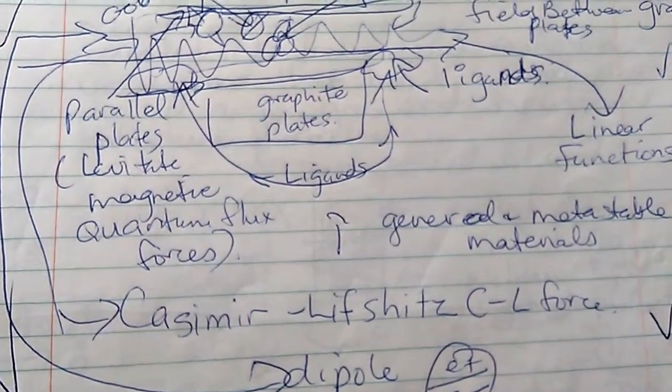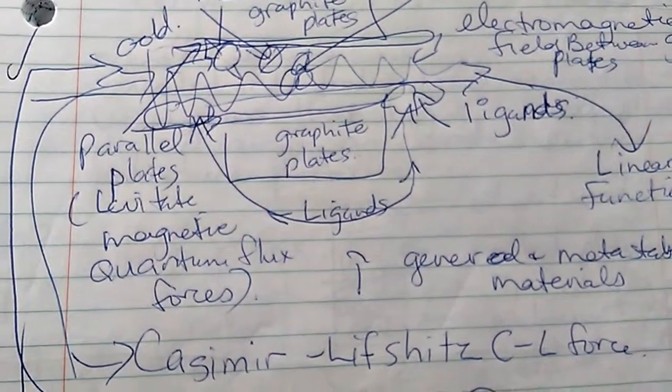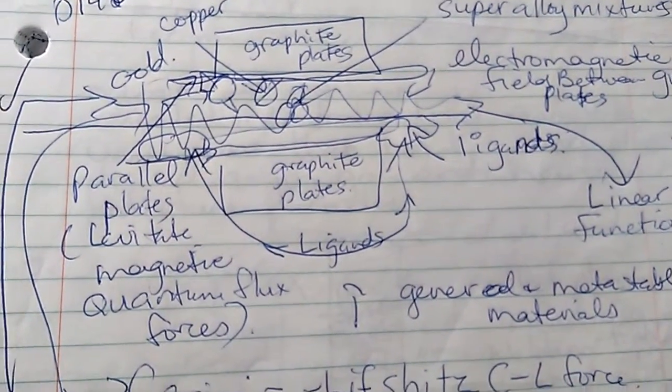Then you have a Casimir-Lifshitz-C to L-Force in the middle partial there between the two graphite plates.